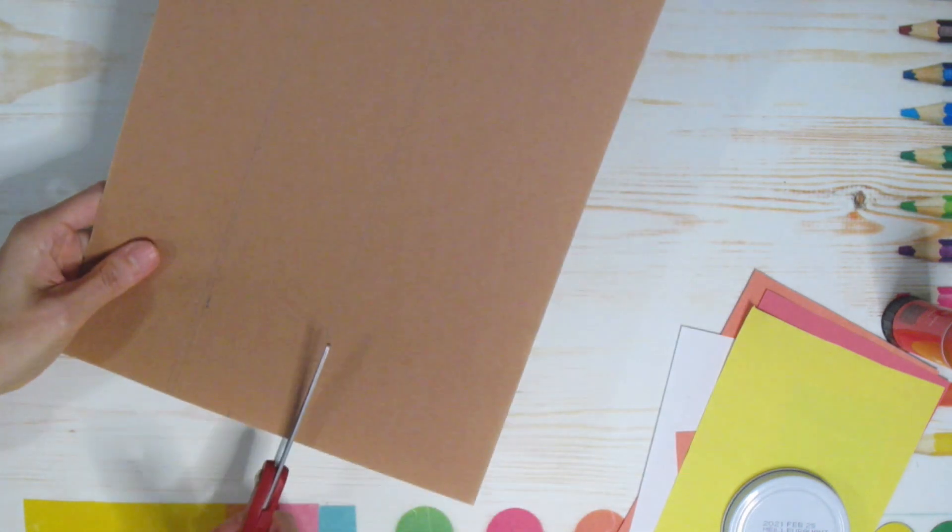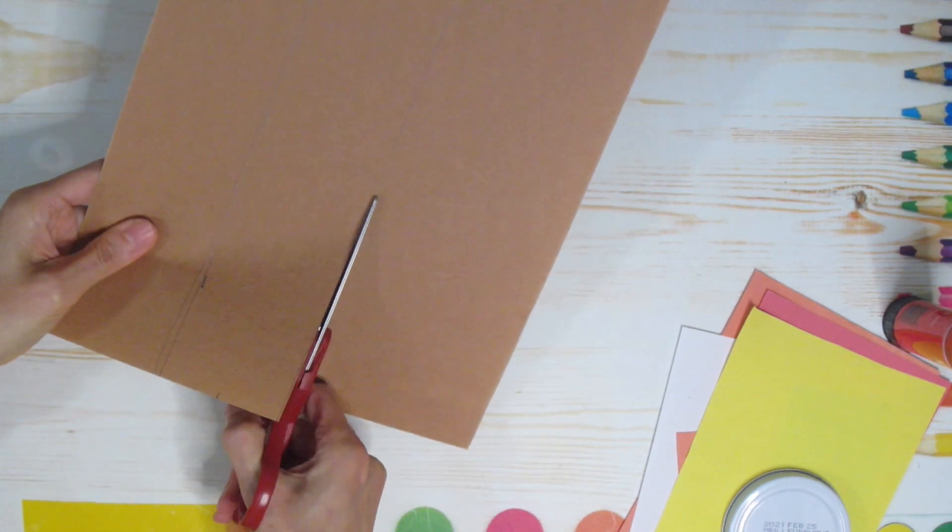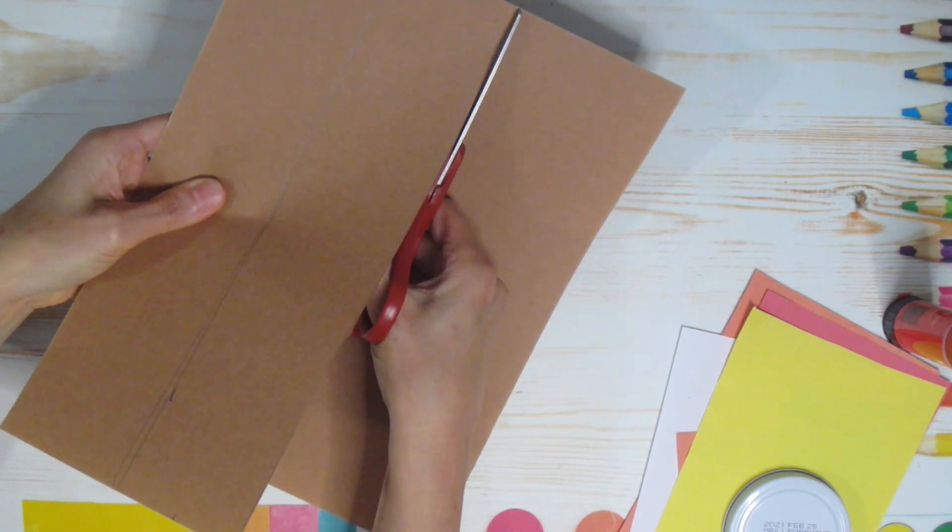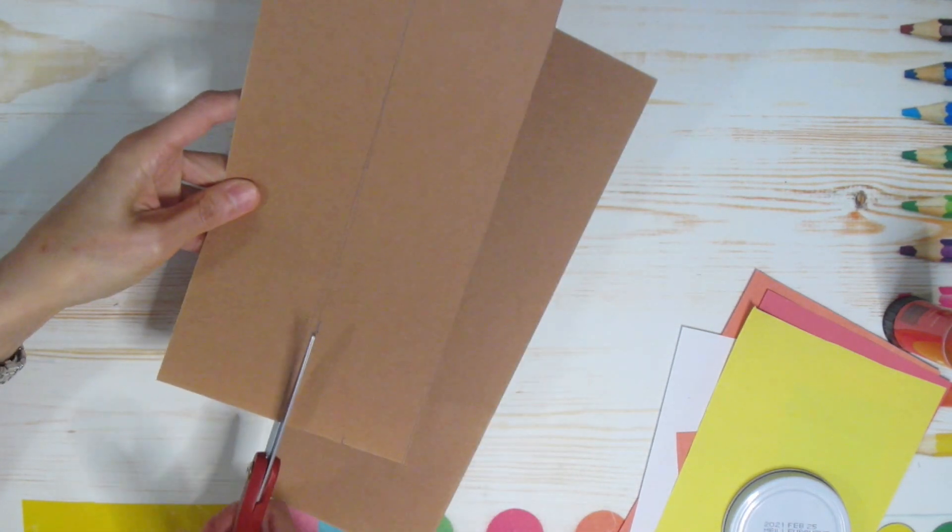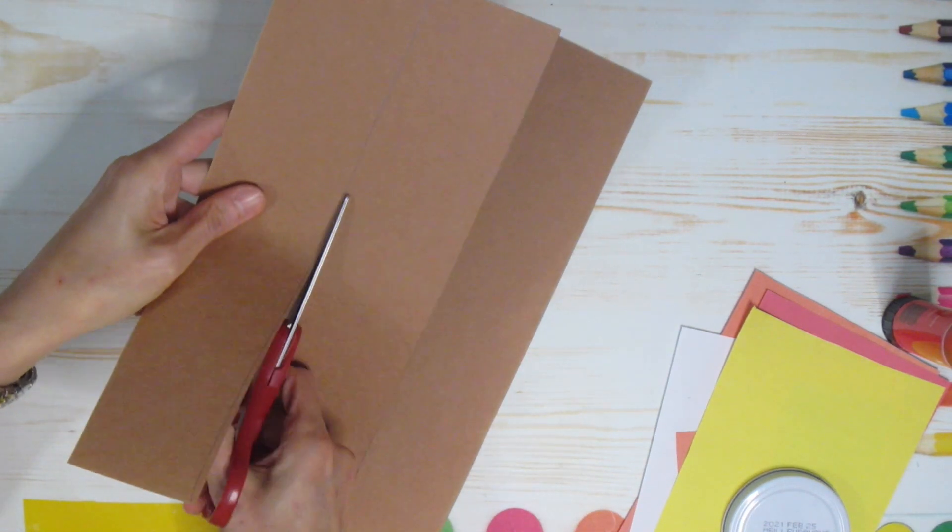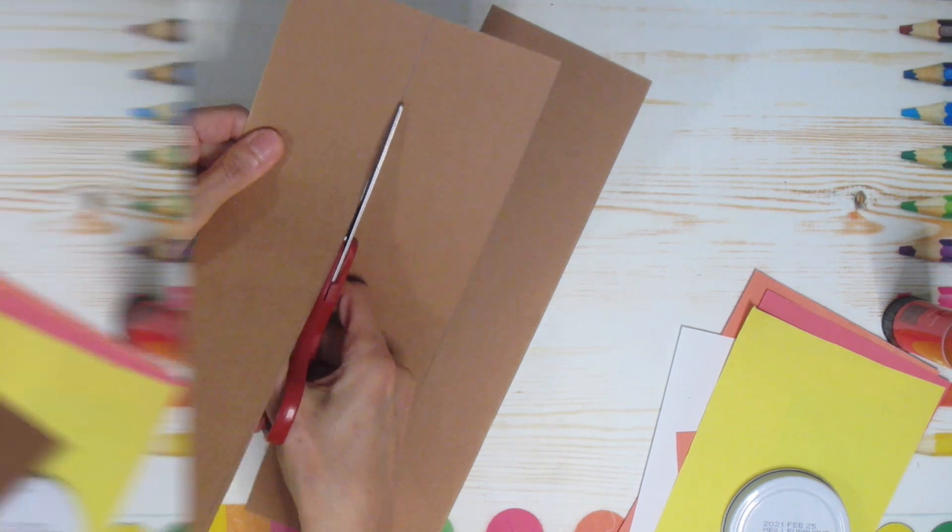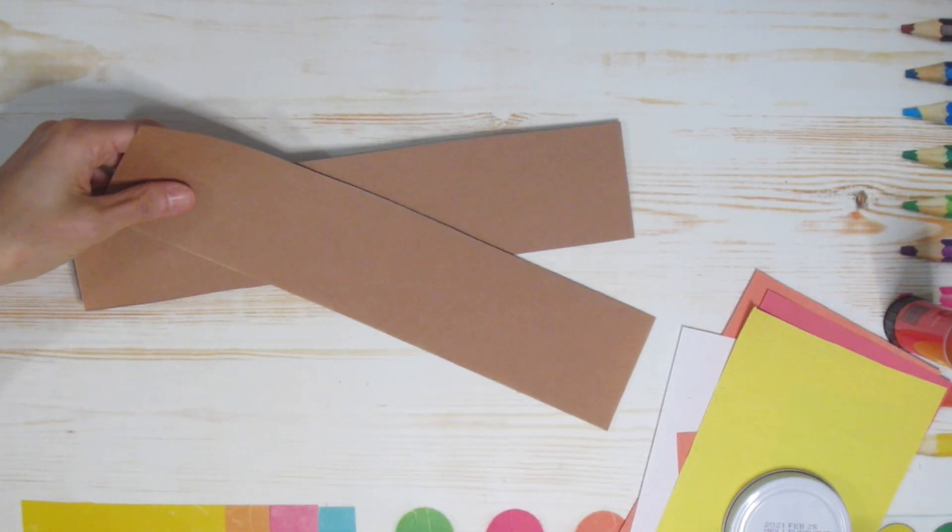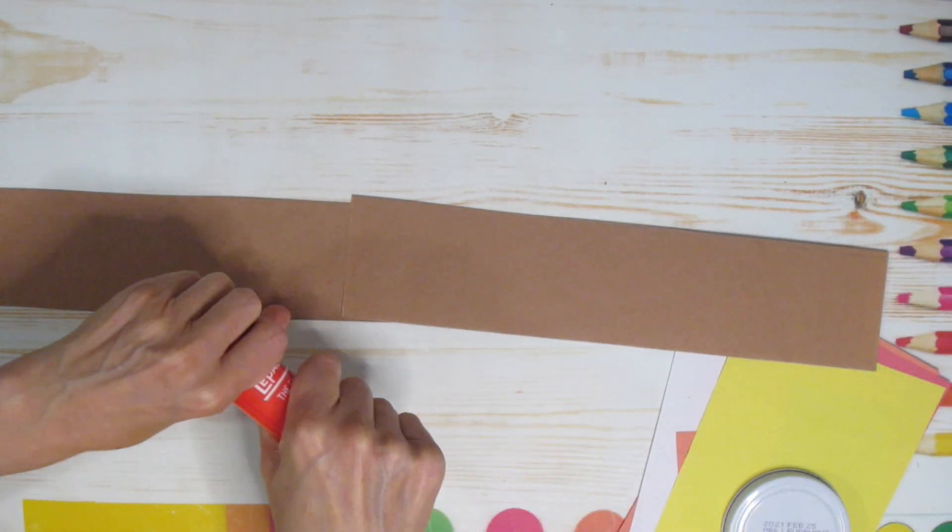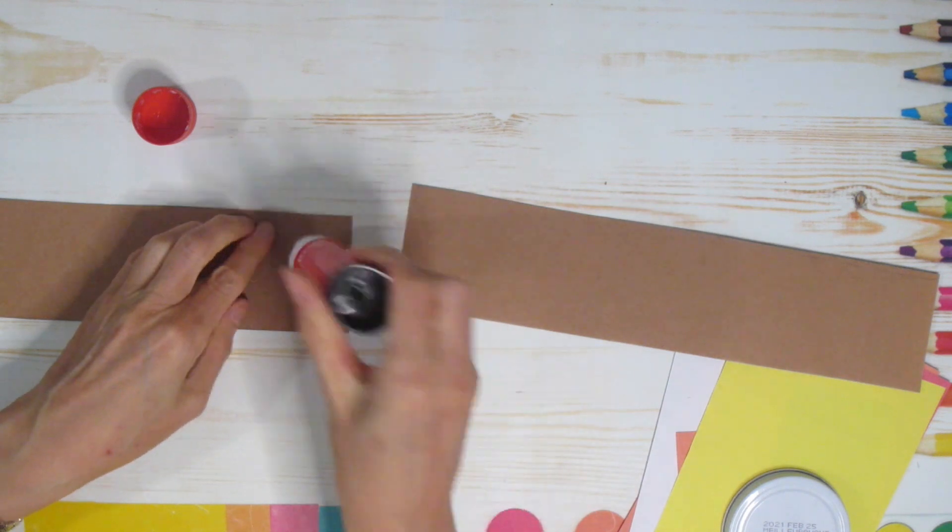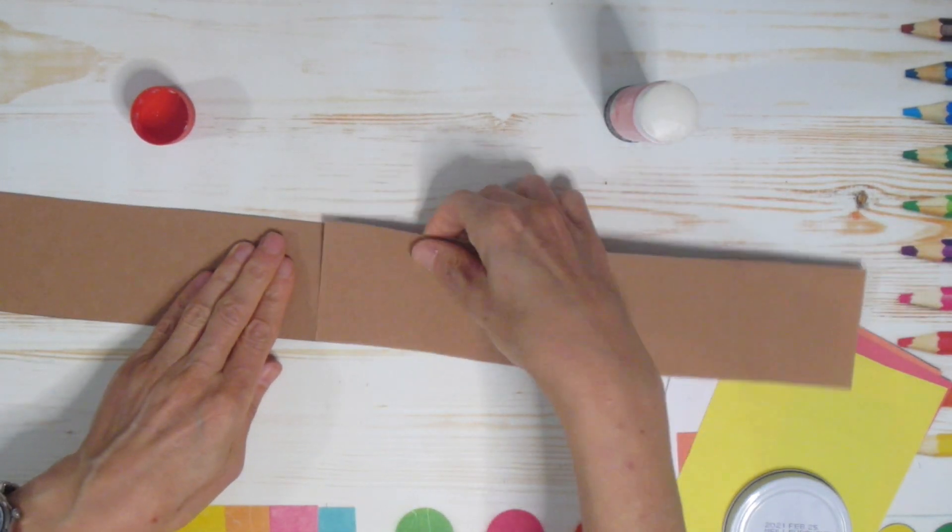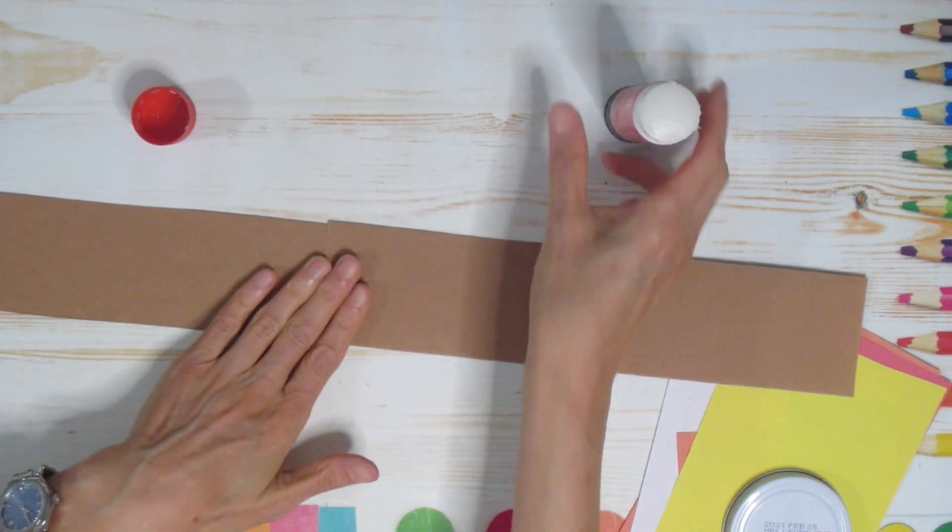Once you have those cut out, if it's not exactly the same width and they're a little bit skinnier or wider, it is fine. That will work perfectly. This is just going to be the band for your hat, for your headband. Then you're going to take those two strips that are the same, match them up and glue them together. Put a little bit of glue on one side, glue those together, and then just leave those to dry.